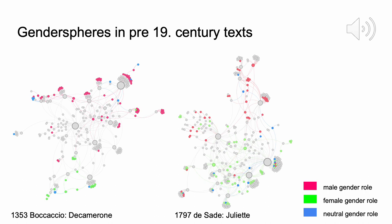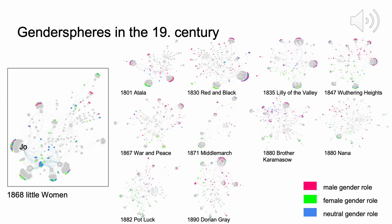In our corpus we mostly included novels of the 19th century, but we also have two novels from before and some from the 20th century. We divided the corpus according to this timeline and colored all nodes in gray except for nodes of the type gender role — male gender roles in red, female in green, and neutral in blue. What becomes visible is that in these two narratives — 'Decameron' by Boccaccio and 'Juliette' by Sade — there is a male and a female sphere that rarely mix up, and a few neutral gender roles scattered around. The picture stays quite similar for the 19th century: male and female spheres oppose each other and neutral roles are scattered.